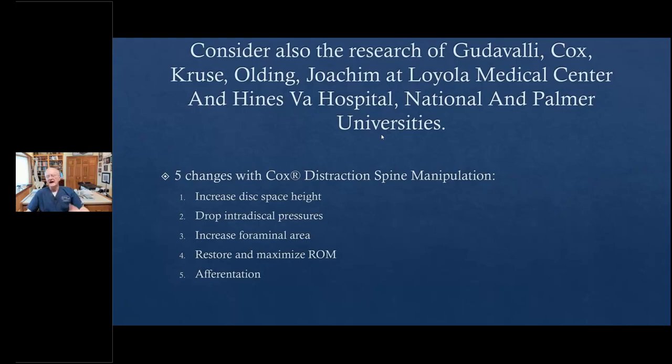You remember from the work that we did at Loyola Medical School in the Hines VA, National and Palmer, the five things that happened when we go to the instrument. I'd ask you to visualize and sense in between your brain and your hand the things that you have documented that are happening in the human spine when we do distraction Cox technique. Number one, there's an increase in the disk space height. We drop the intradiscal pressure from a positive 25 millimeters to a centripetal negative force of up to 192 millimeters of mercury. We increase foraminal area by 28%. We restore, we maximize physiological range of motion, all of which results in the positive afferentation.